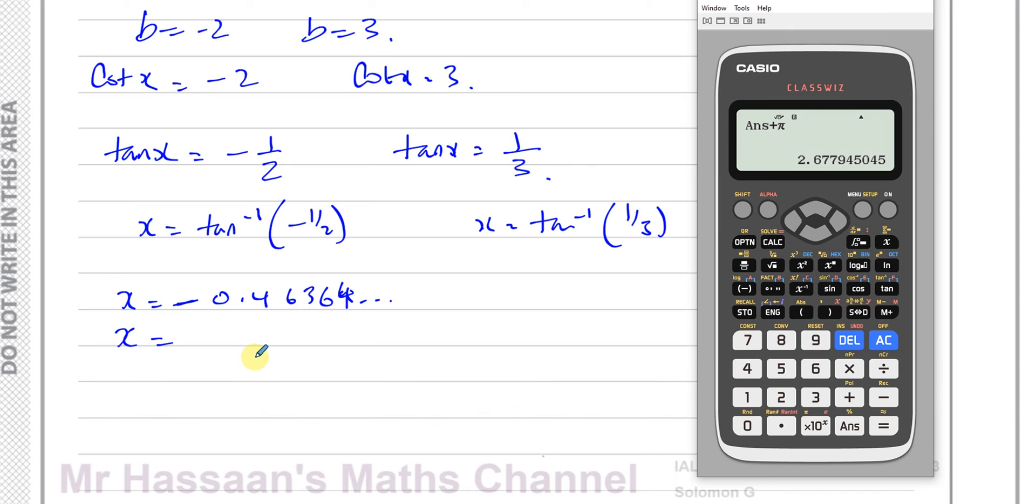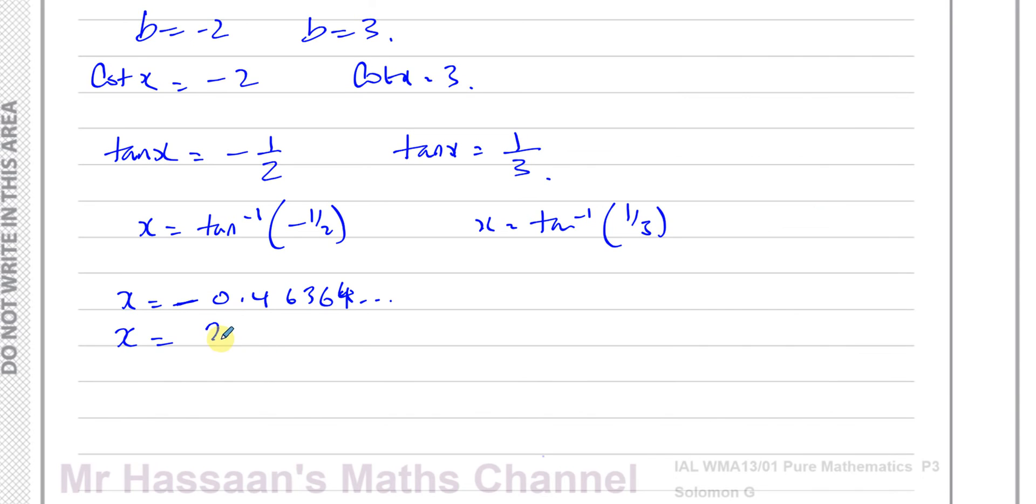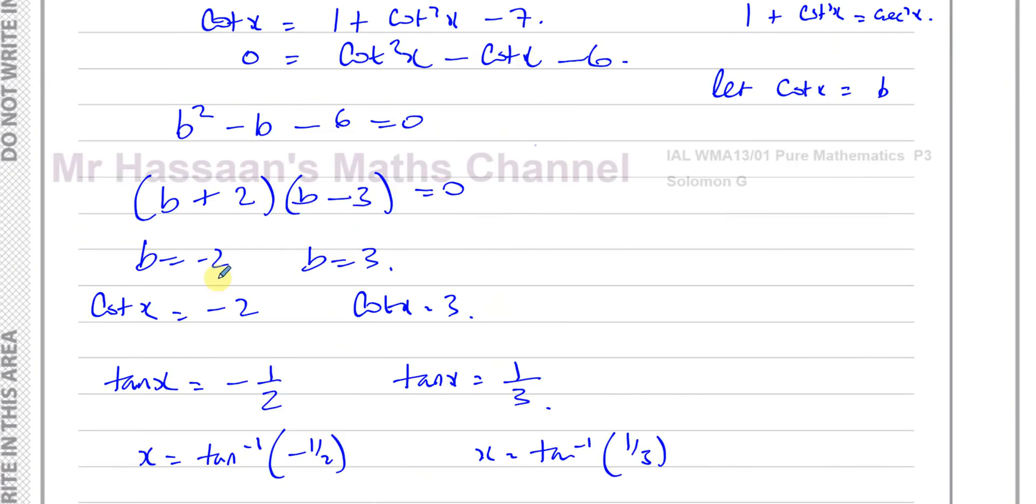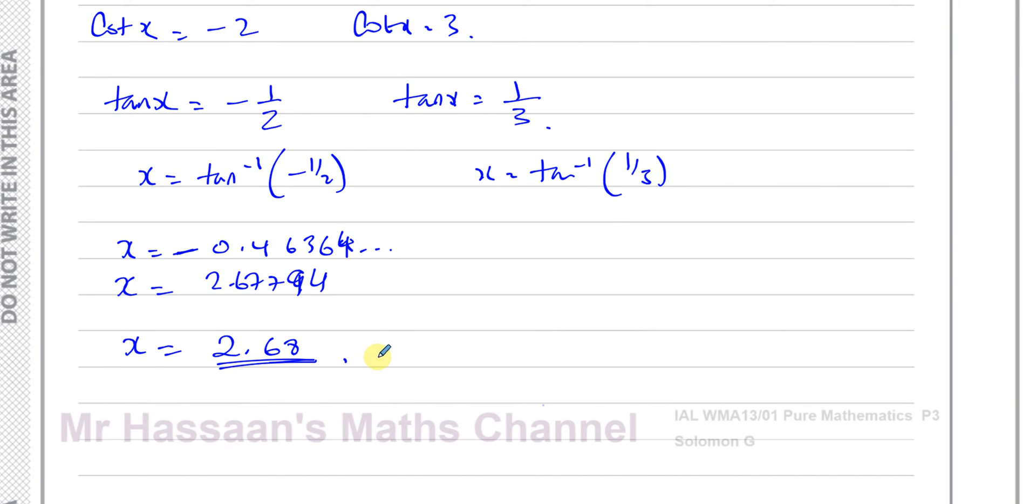And that gives us 2.67794. So to two decimal places, that's 2.68. So that's the answer for this section. Now, any other answers are out of the range, because it's only up to pi. So if I add another pi to this, I'll be outside of the range. And here we have x equals, now we're going to do inverse tan of 1 third.